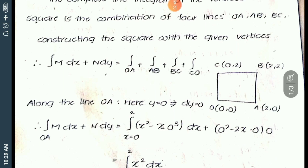Along the line OA, the constant coordinate is y = 0 for both vertices O and A, so dy = 0. Substituting into the integral over OA of M dx + N dy, the x coordinate changes from 0 to 2.